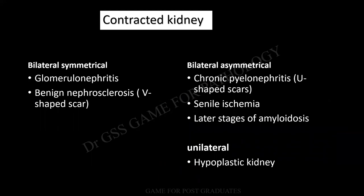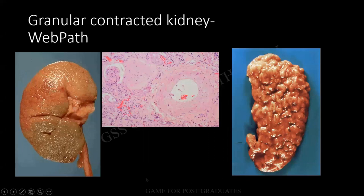Contracted kidney: whether it is bilateral or unilateral, and if bilateral, whether it is symmetrical or asymmetrical. If symmetrical, think of glomerulonephritis or nephrosclerosis — there will be a V-shaped scar. In the case of pyelonephritis there can be a U-shaped scar. Also consider senile ischemia and later stages of amyloidosis — amyloidosis is enlarged at first, but later there is fibrosis and contraction. If unilateral, it can be a unilateral obstruction or a hypoplastic kidney. This is the case of benign nephrosclerosis — fine granular contractions, bilateral and symmetrical. In pyelonephritis you will be able to appreciate the difference, with thickening of vessel walls and sclerosis of glomeruli seen in glomerulonephritis.